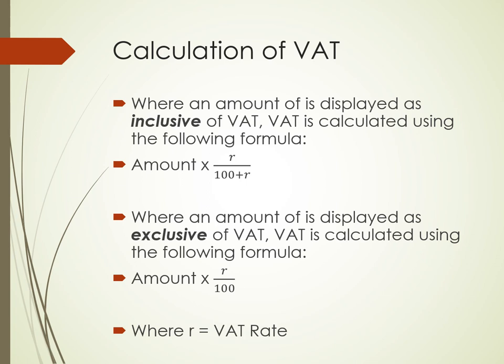The calculation of value-added tax. An amount can be stated as either inclusive or exclusive of VAT. If the amount is exclusive of VAT, you still have to add VAT to that transaction to get the total amount the customer will pay. If an amount is inclusive of VAT, that is the final amount the customer will pay. To calculate the VAT when an amount is stated as inclusive of VAT, you take the amount times R divided by 100 plus R, where R equals the VAT rate. When an amount is stated as exclusive of VAT, you take the amount times R over 100 to get the VAT amount.